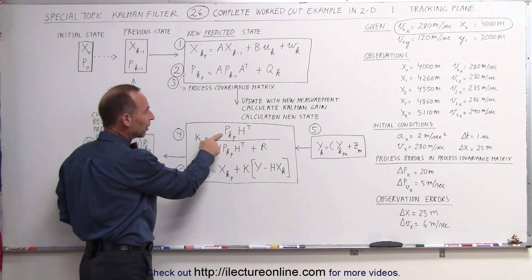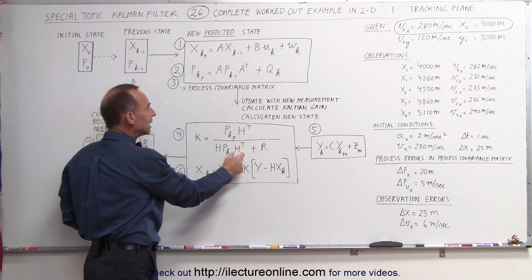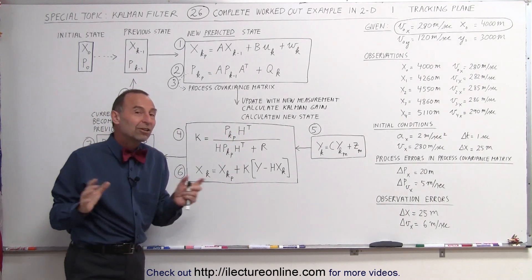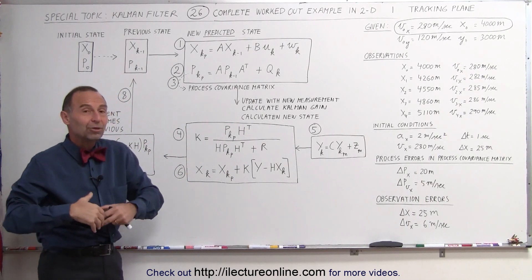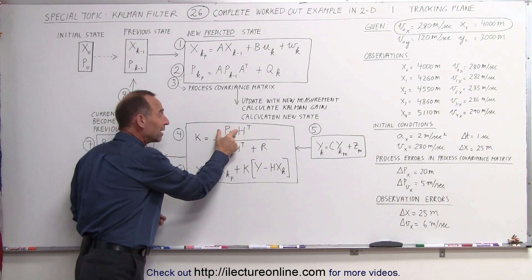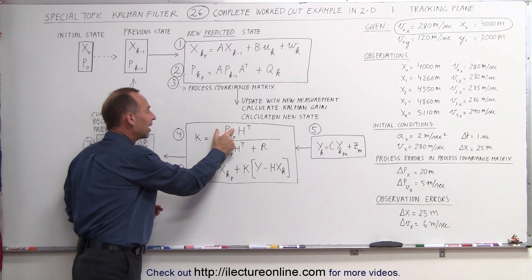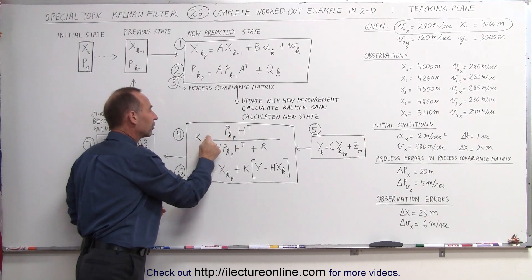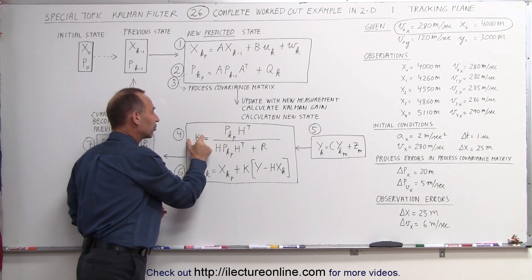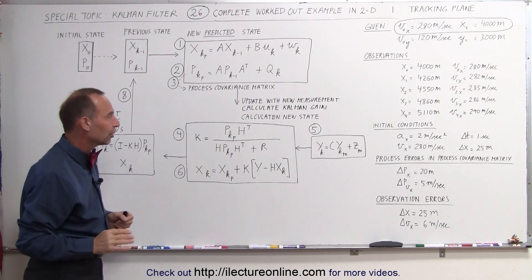Notice we have the process covariance matrix P, that's going to be the predicted value, and of course we need H matrices. Now the H matrices are nothing more than simply transformation matrices. To be able to take the format of this matrix, we'll have a different n by n or n by n size compared to the Kalman filter matrix, so we have to be able to convert from this formatted matrix to this formatted matrix, and that's all these H matrices are, nothing more than that.